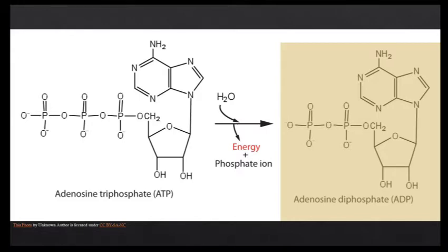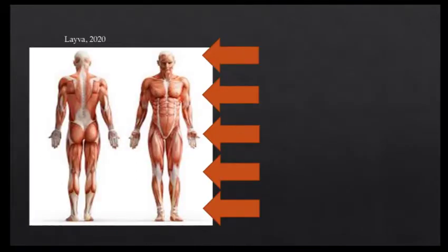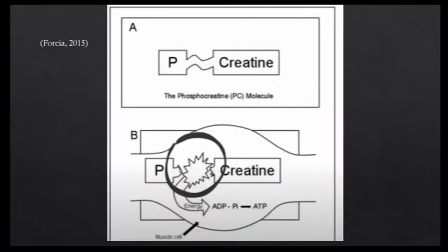Energy production is reliant on the resynthesis of ATP, meaning that the broken ADP needs another phosphate to then repeat the cycle. Creatine phosphate is able to respond to the high demand for energy production because of the reserves of high energy phosphates. These phosphates are stored in the skeletal muscles and are able to provide energy for the resynthesis of ADP-Pi to ATP.